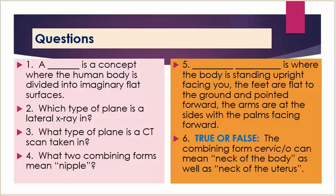Questions. Number one: a blank is a concept where the human body is divided into imaginary flat surfaces. Number two: which type of plane is a lateral x-ray in? Number three: what type of plane is a CT scan taken in? Number four: what two combining forms mean nipple? Number five: blank blank is where the body is standing upright facing you — the feet are flat to the ground and pointed forward, the arms are at the sides with the palms facing forward.